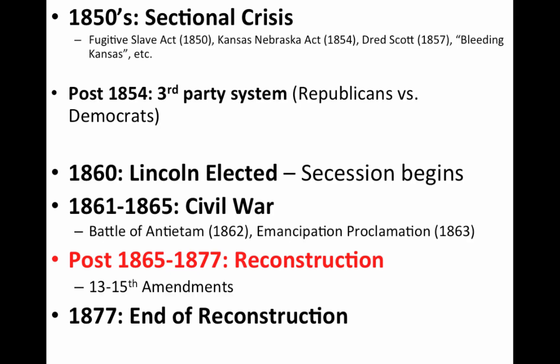Remember the election of 1876 — it's disputed between Rutherford B. Hayes and his opponent. Following that, there's the Compromise of 1877, which ends Reconstruction. And you get the rise of Jim Crow laws, sharecropping, etc.